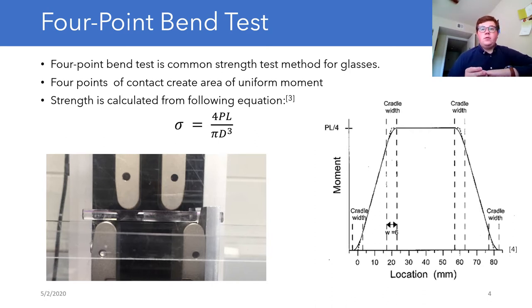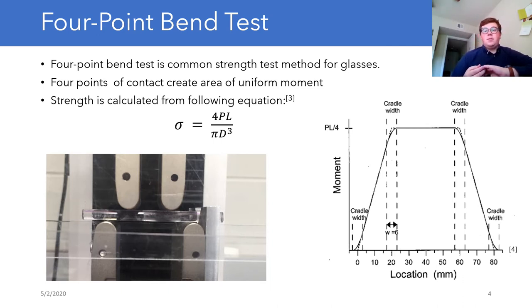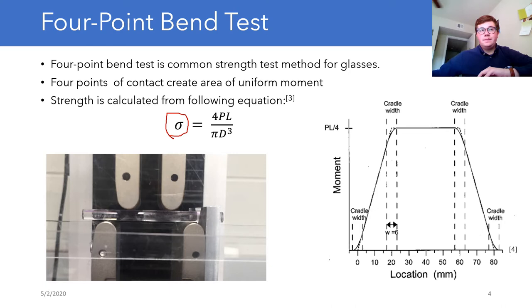This helps eliminate the inconsistency we see with various defects in brittle materials. And finally, taking this maximum force P, we can use it to calculate our theoretical strength using the corresponding equation.